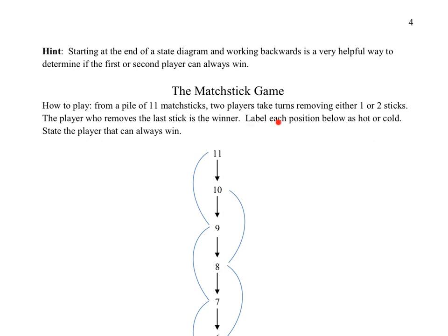Within state diagrams, it's nice to find a creative way of labeling positions. Rather than drawing 11 individual matchsticks, we just label that with the number 11, representing a pile that contains 11. Our job is to figure out whether 11 is a hot or cold position. We're going to use what we just learned, and the hint is to work backwards — going to the end of the diagram and working backwards is very helpful.